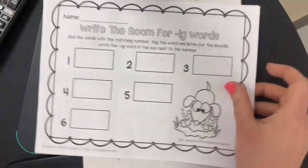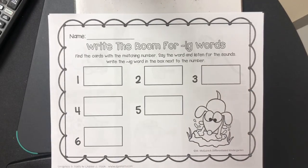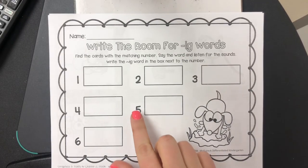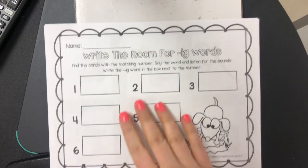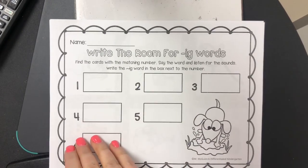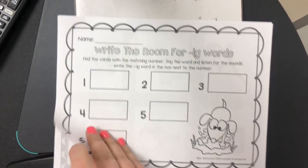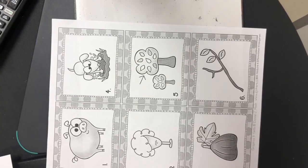This video is to explain the center worksheets for the week. On Monday you will be doing Write the Room for the egg word family words. The cards are here — you can hide them or hang them up around the room, and then write the word in the matching number space.